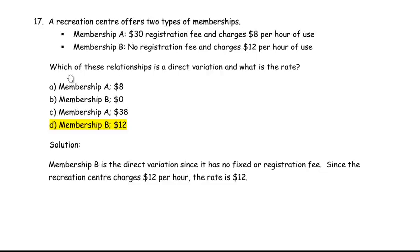You're asked which of these relationships is a direct variation and what is the rate. Partial variations have a fixed amount, so membership A is a partial variation — there's a $30 registration fee, that's a fixed amount. When there's no initial amount or initial cost, no fixed amount, that's a direct variation.